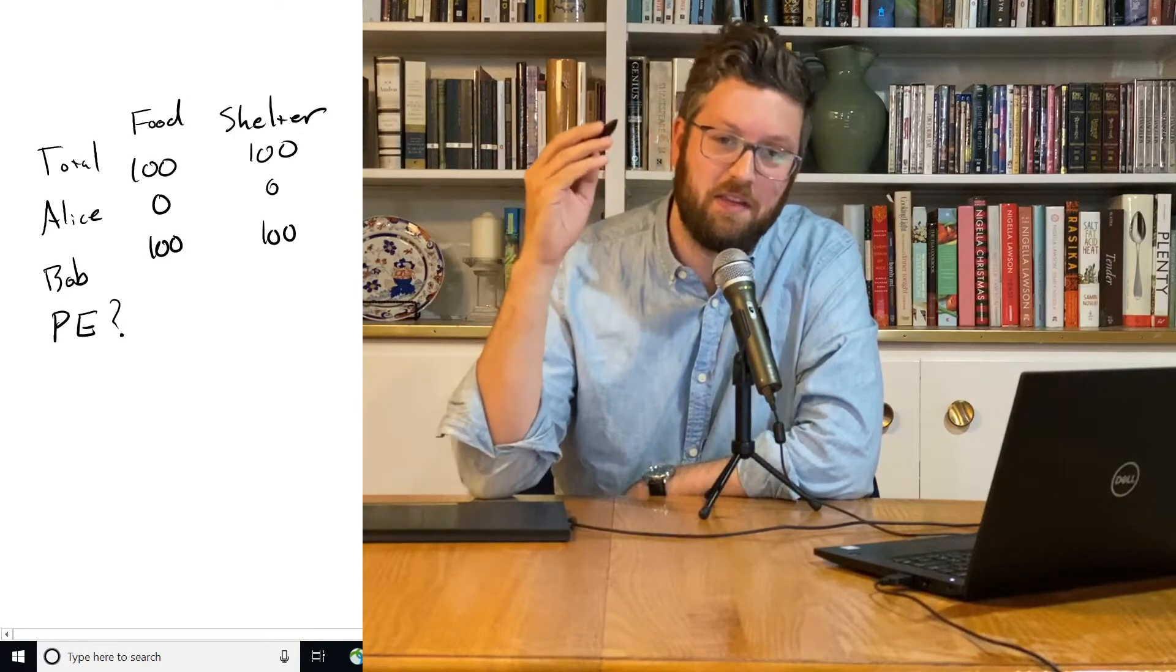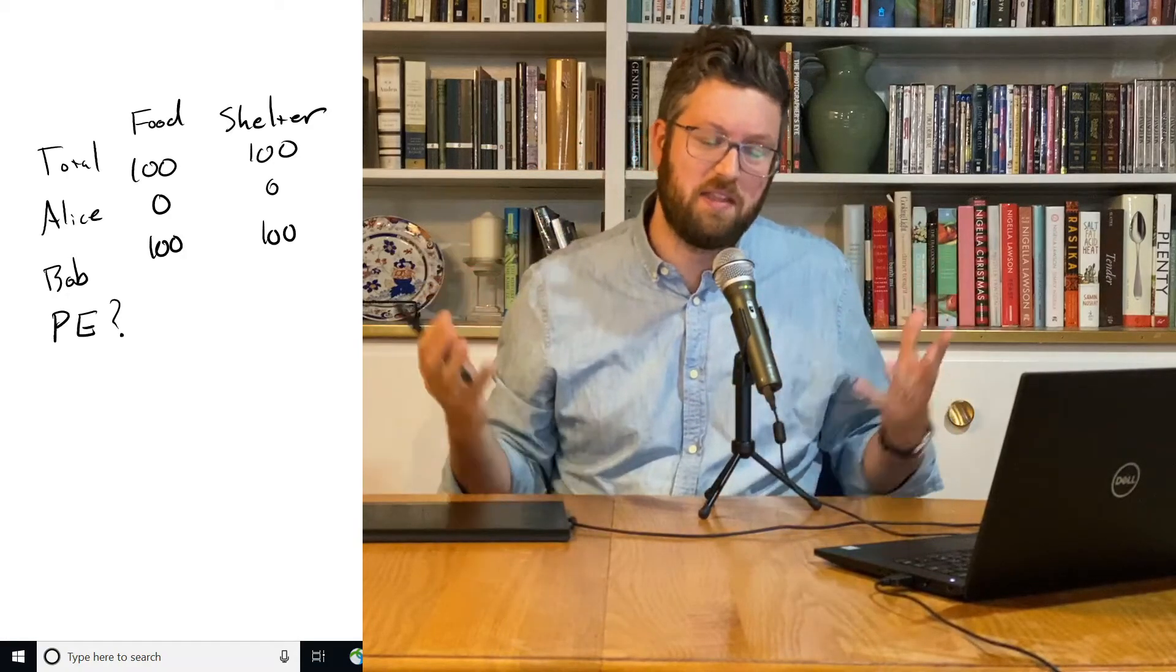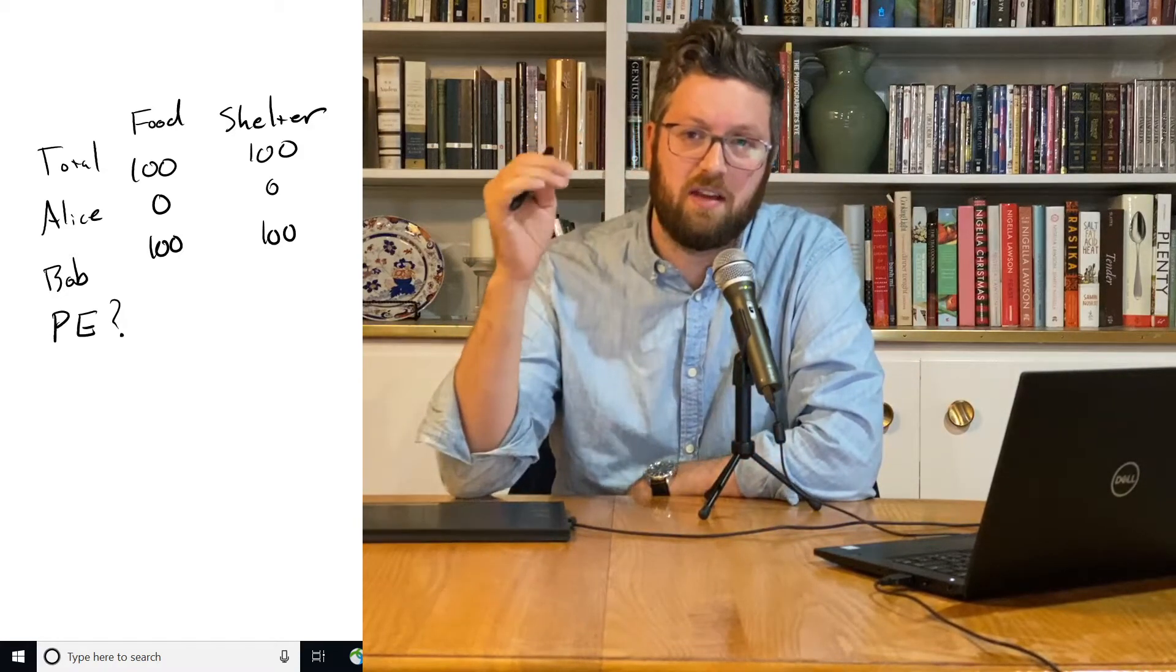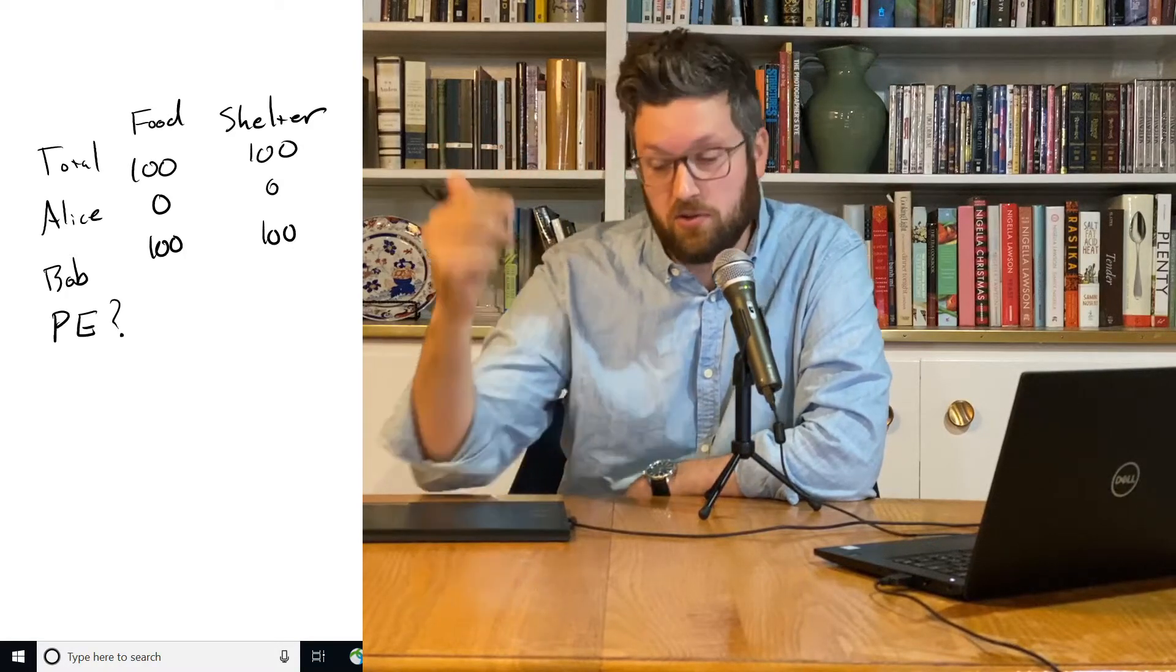And it doesn't matter that the difference between 0 and 1 is maybe the difference between life and death for Alice, which is really big, and the difference for Bob is minuscule. He won't even notice. That's not important. It's just this strict thing of can you make someone better off without making anyone worse off? And here the answer is no.